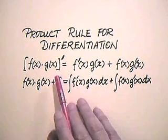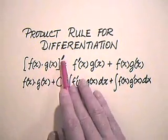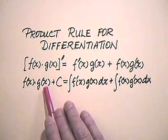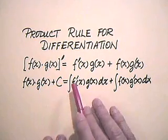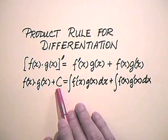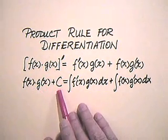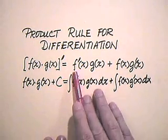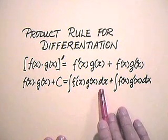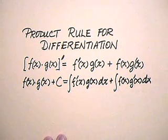Consequently, I can write that as an anti-differentiation formula. The anti-derivative of the derivative is just itself, f(x) times g(x), plus arbitrary constant C. So the product plus any constant is the anti-derivative of the integral of f'(x)g(x) dx plus the integral of f(x)g'(x) dx.